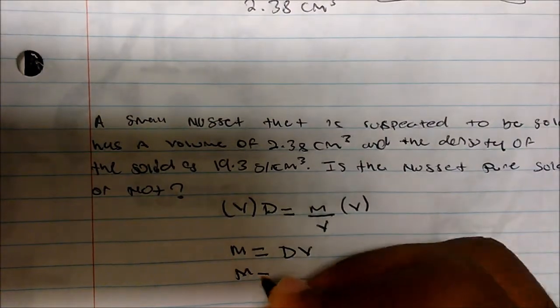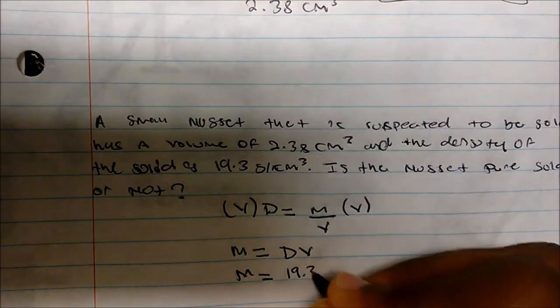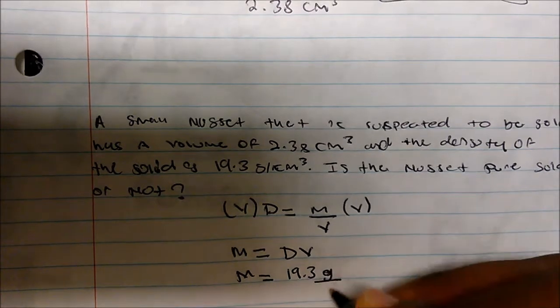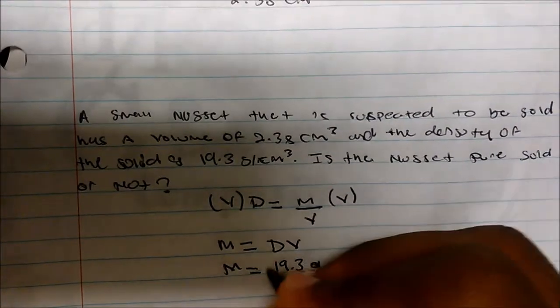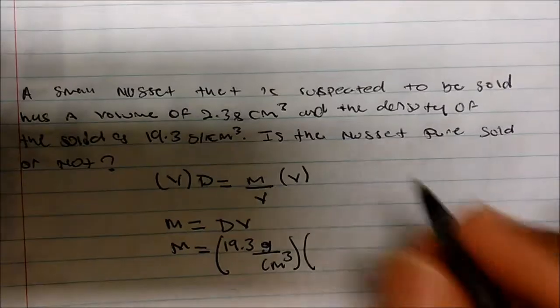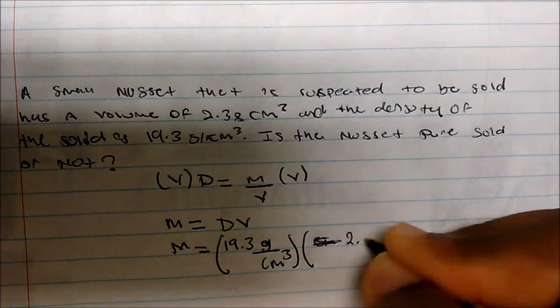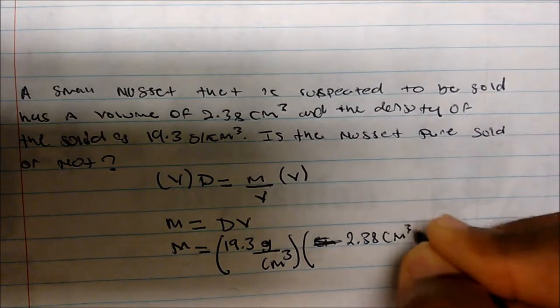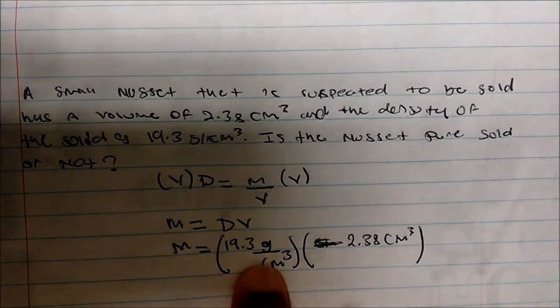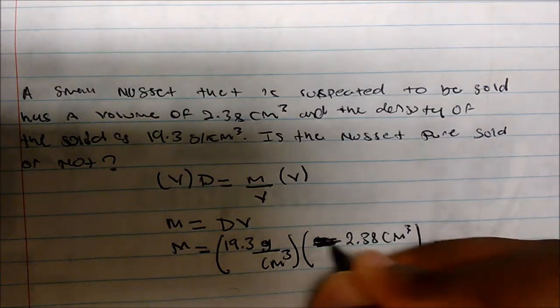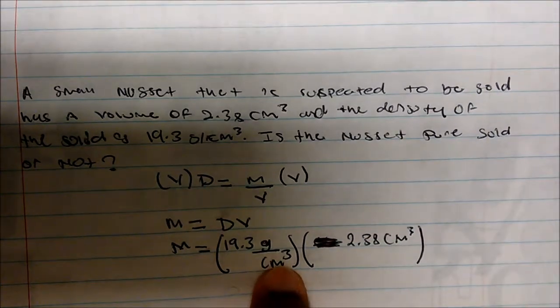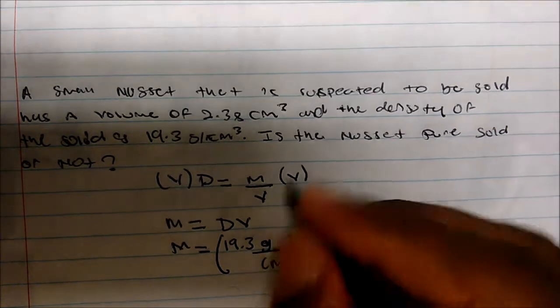Okay, and so if I look at this, the mass will be the density, which is 19.3 grams per cubic centimeters. I'm going to simply multiply that by the volume, which happens to be, sorry about that, 2.38 cubic centimeters. Okay, well, notice that when I multiply these, my cubic centimeters and cubic centimeters will cancel, right?